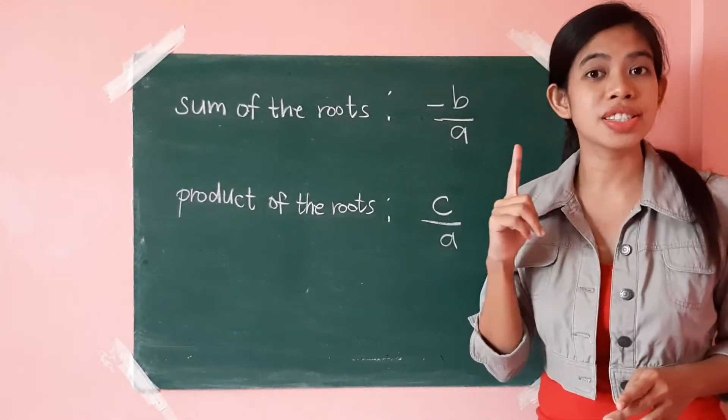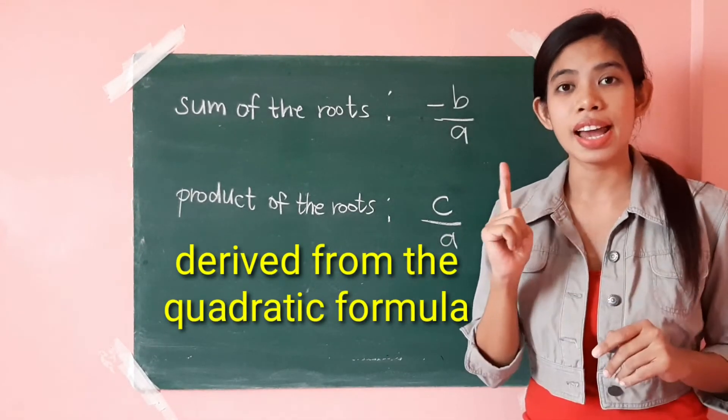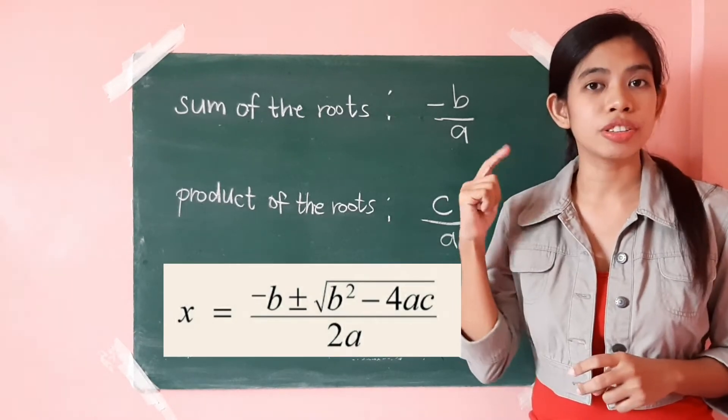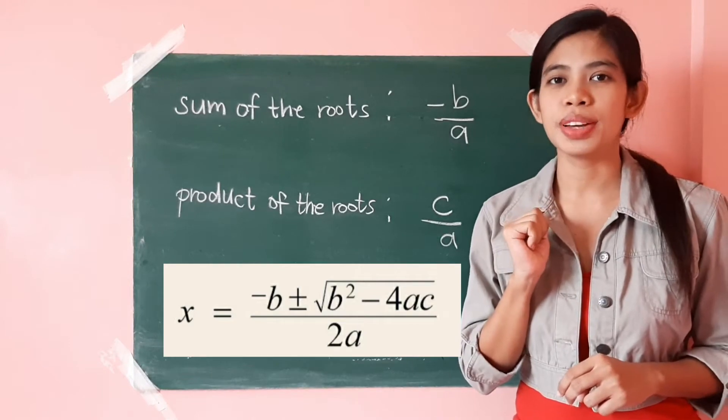So, these formulas are just derived from our quadratic formula. This again, x equals negative b, positive or negative square root of b squared, minus 4ac, all over 2a.